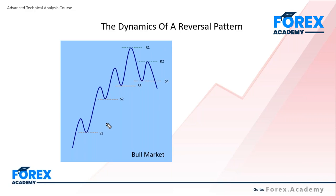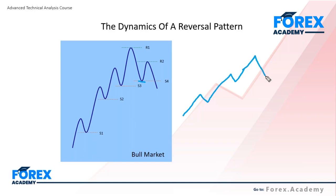The next piece of the puzzle that needs to be identified is whether prices will then ultimately move below the point labeled S3. If that does happen, then we can clearly see that we've moved from a market that has defined a sequence of higher highs and higher lows — in other words, the underlying direction in the market has gone from up to down. This is just a standard observation of being able to follow the evolution of price or the evolution of a trend as and when this price information becomes available.